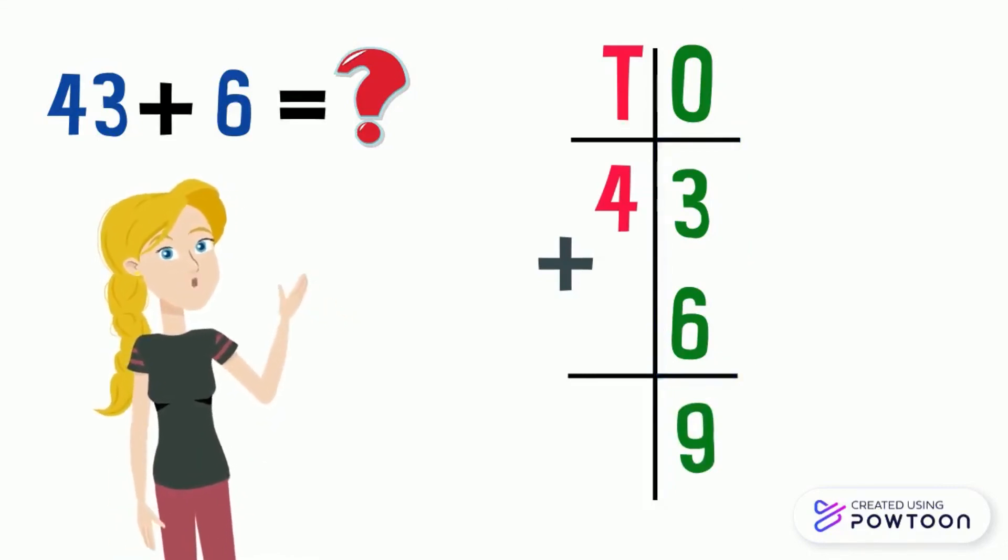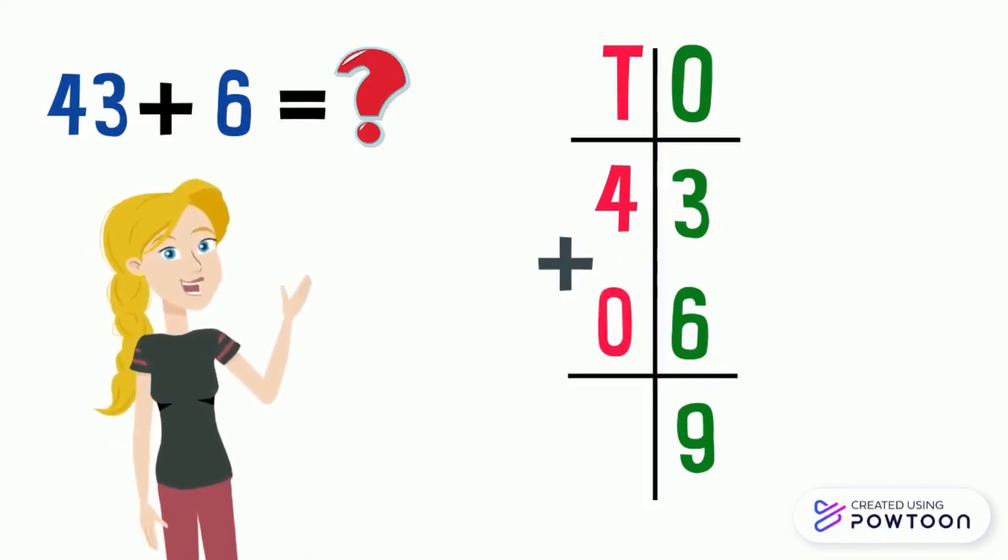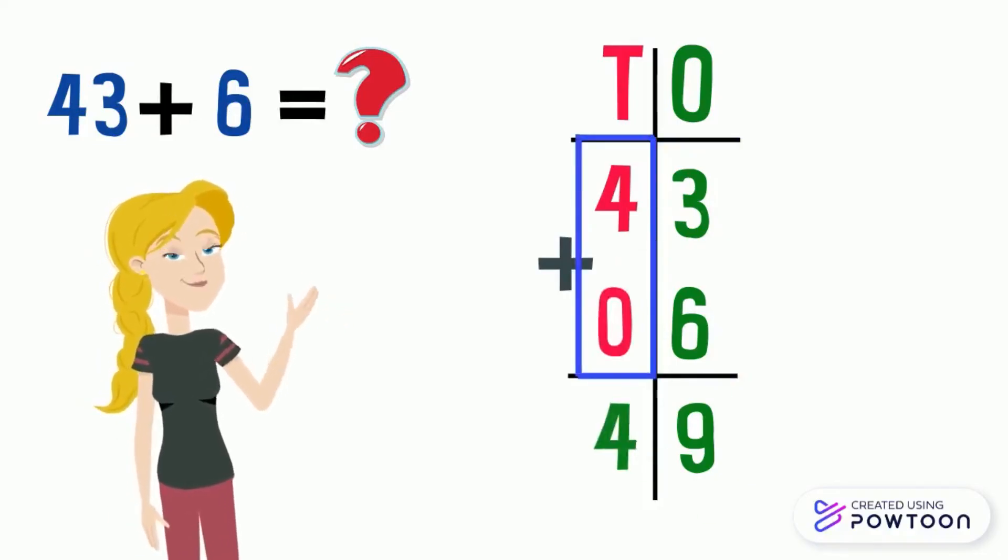Then, we add the tens. Note that we can put 0 here in the tens place to make our calculation easy. 4 plus 0 equals 4. So, the result is 49. 43 plus 6 equals 49.